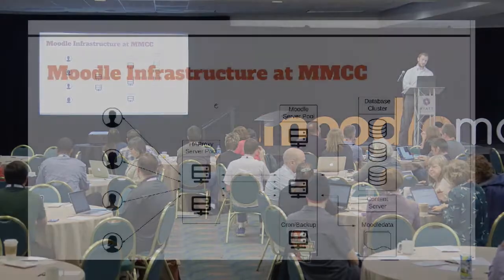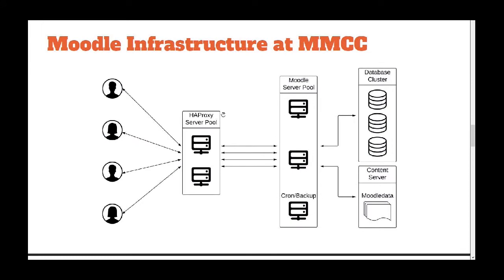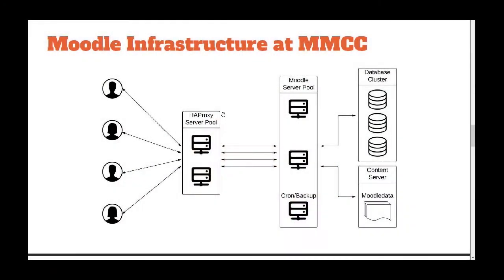This is kind of what our production infrastructure at MMCC looks like. This backup instance is on a single VM hosted somewhere else. Users come into our load balancer — we use a software load balancer called a proxy — which then directs to each of our application servers, most of which are containerized. They each access our persistent data: we have a database cluster for great uptime, and our Moodle data gets served off of a content server.